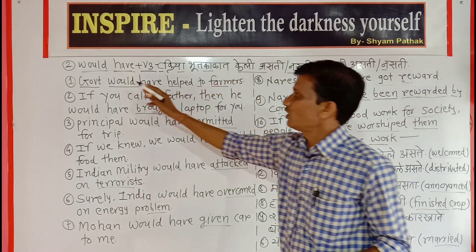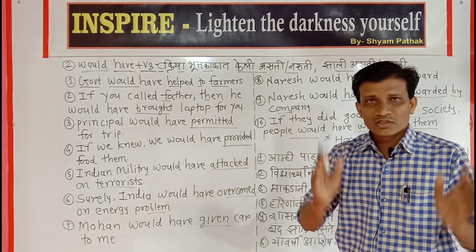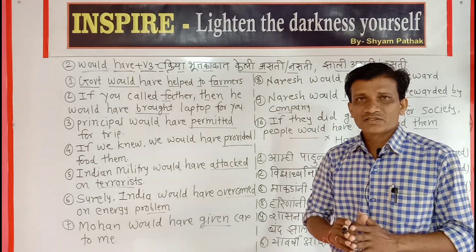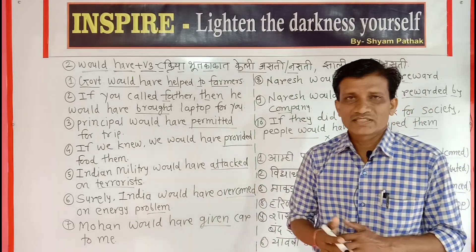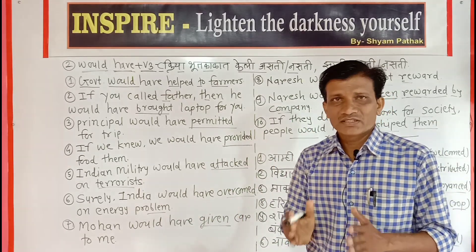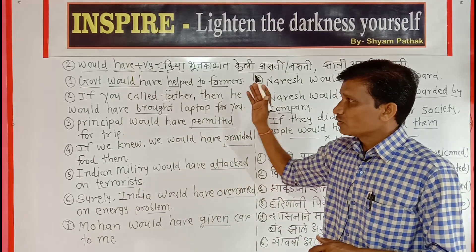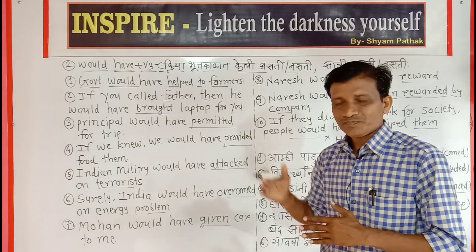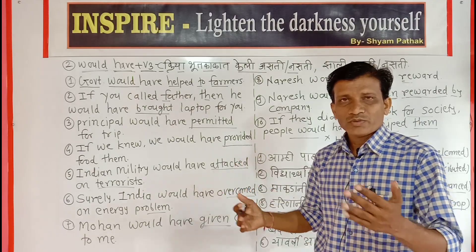Friends, we have seen the new structure: Would Have + V3. Now what you have to do is write down all sentences, all verbs, and all actions which you are going to tell anyone. Learn V1, V2, and V3 for all those verbs. Thanks for watching our today's video.